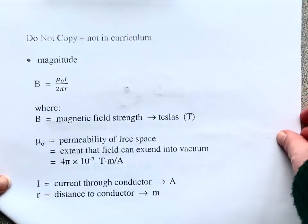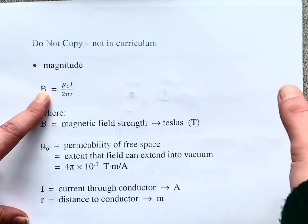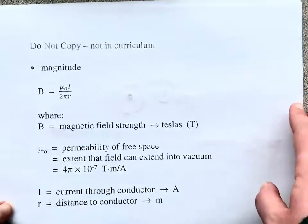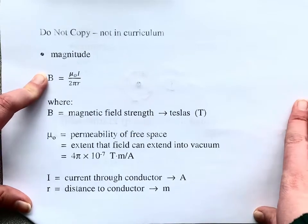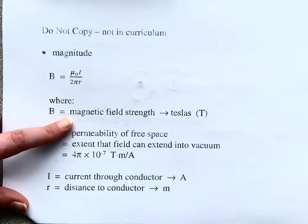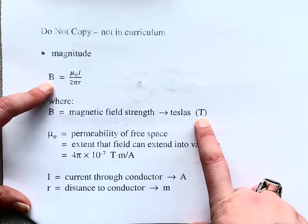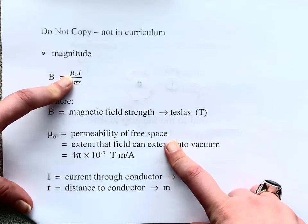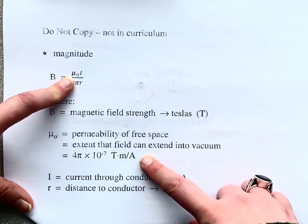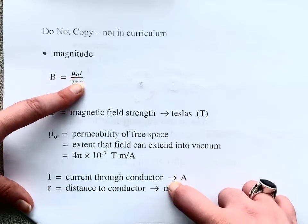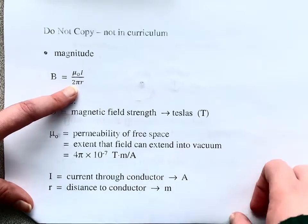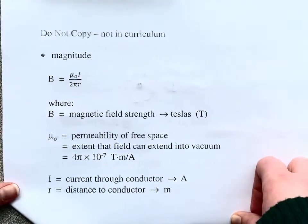There is a way to calculate the magnetic field — B is measured in teslas. The equation is B = μ₀I / (2πr), where μ₀ is the permeability of free space, I is the current through the conductor, and r is the distance to the conductor where the compass is. You don't actually need to use this equation at the high school level, but it's good to know if you continue with physics.